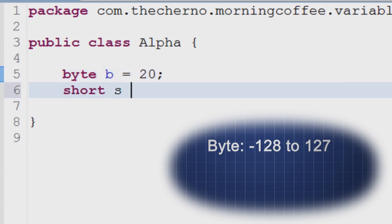Short is the second smallest variable ranging from negative 32,768 to positive 32,767. Short is probably the least used variable in Java now as it was useful in the past for 16-bit computing which has since become very rare.